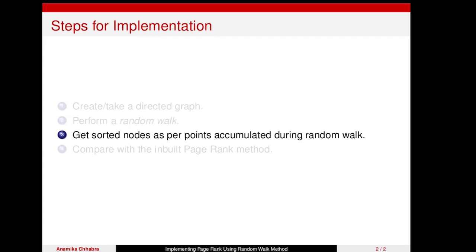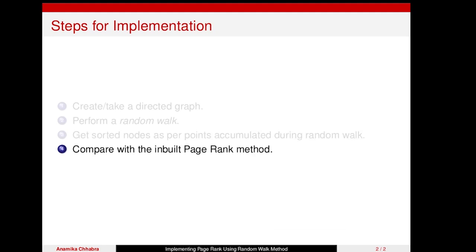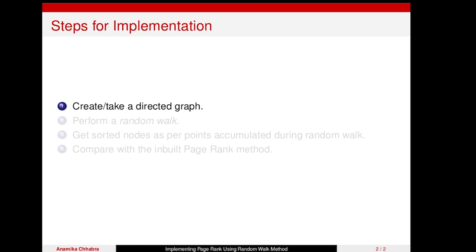After performing the random walk, we will have a count of the number of times we reached each node — that is the random walk points. We are going to rank the nodes based on those points. Finally, as we did in the previous video, we will compare our results with the results from the built-in PageRank method in NetworkX. The first, third, and fourth steps are mostly the same as before, so the main thing to implement is the random walk, which we will do in the next video.